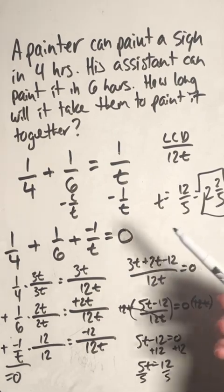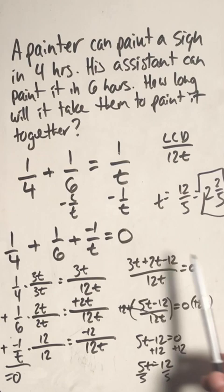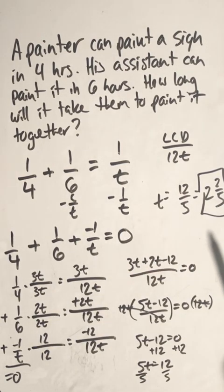So, if one person paints a room in 4 hours, and another person paints the same room in 6 hours, if they work together, they will be able to paint the room in 2 and 2 fifths hours.